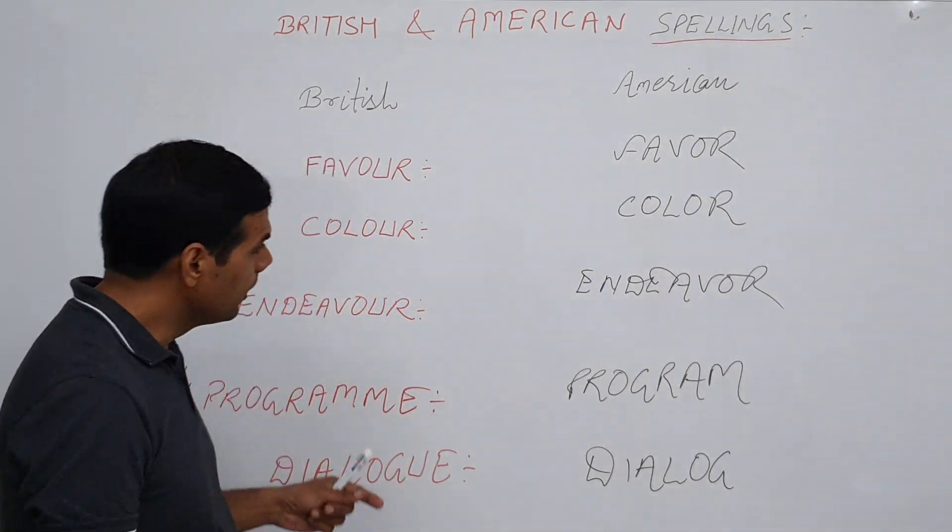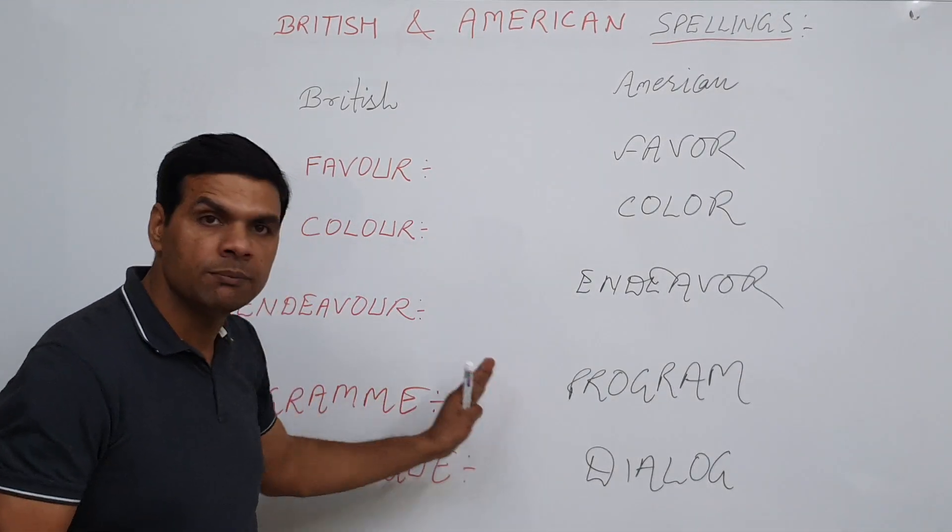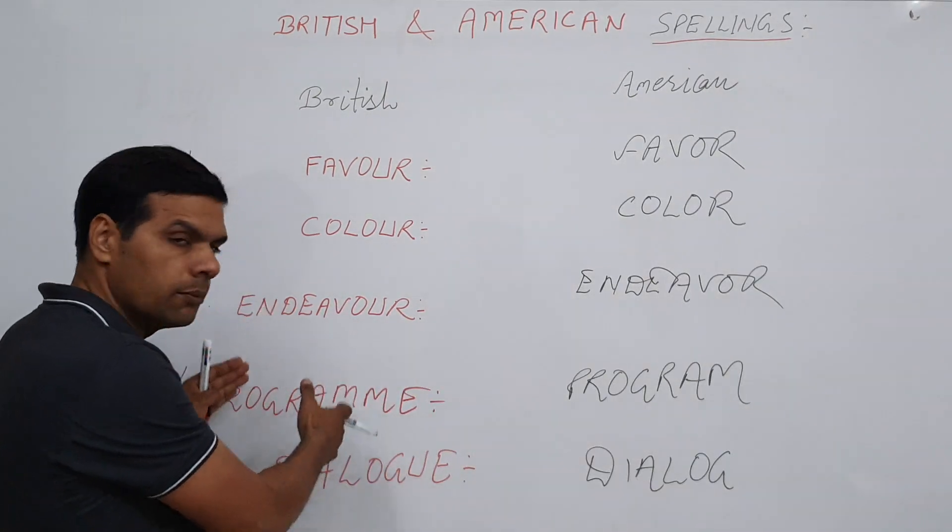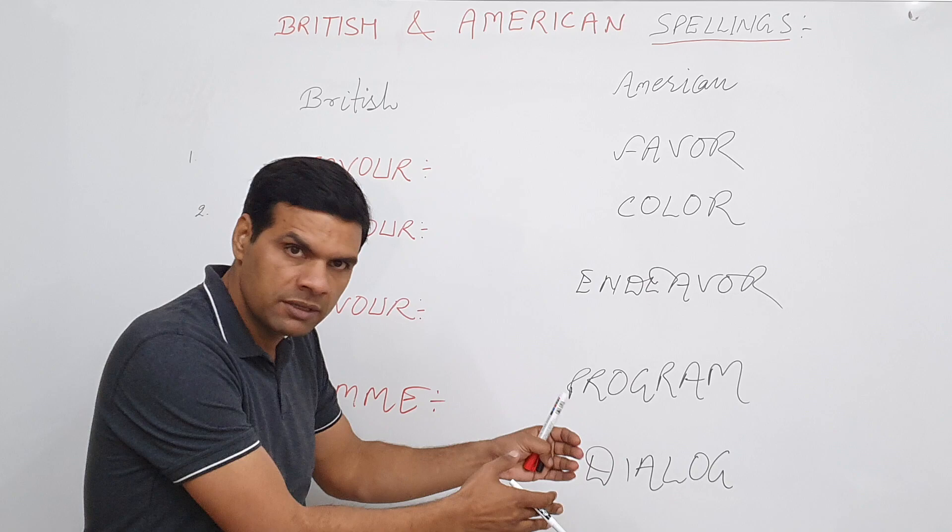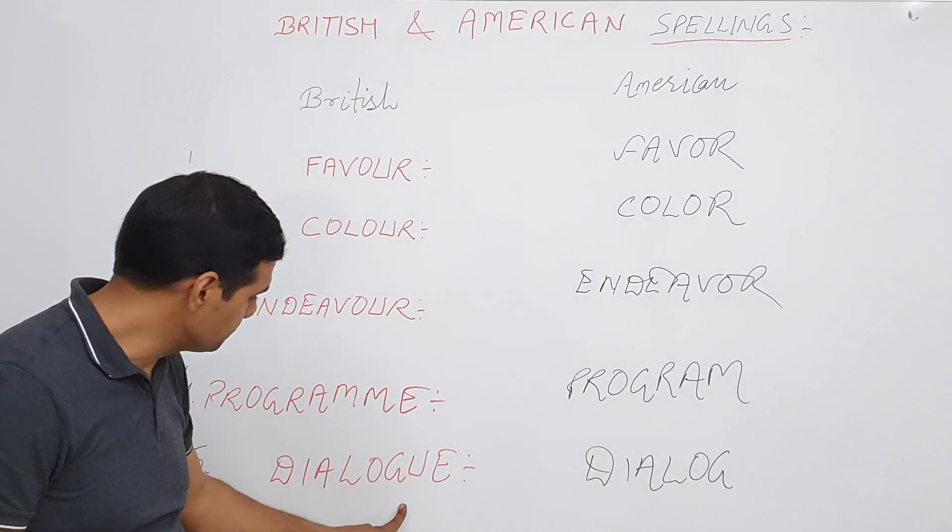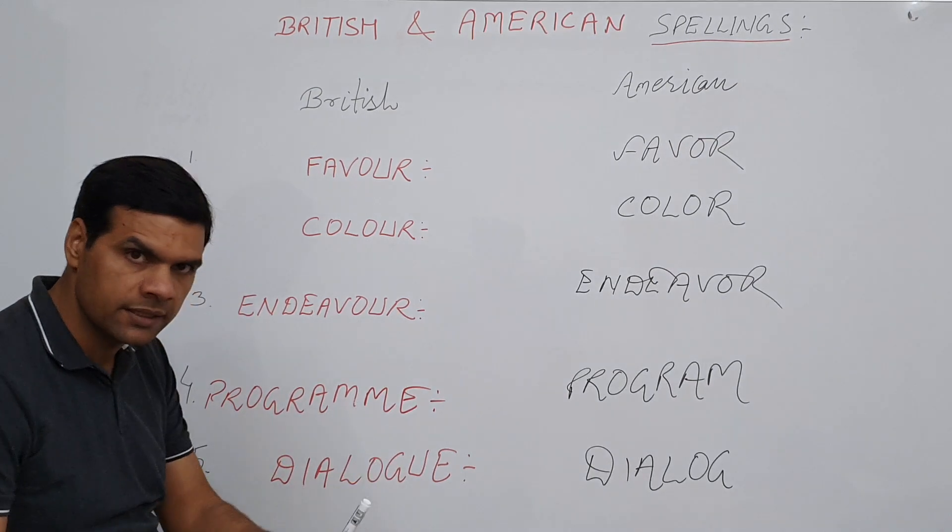Spellings are complicated, Americans have tried to simplify them. Let's talk about this word a little bit more. This word is very similar, especially the last few letters, to words like R-O-G-U-E. What is the pronunciation of this word? Rogue.